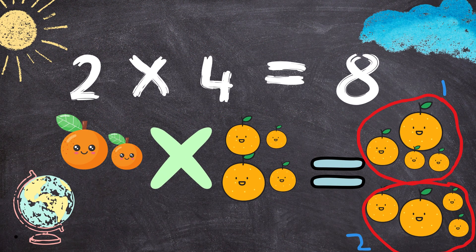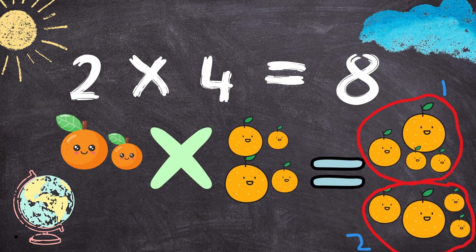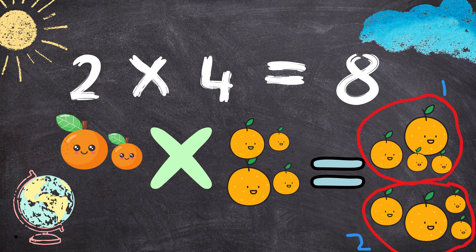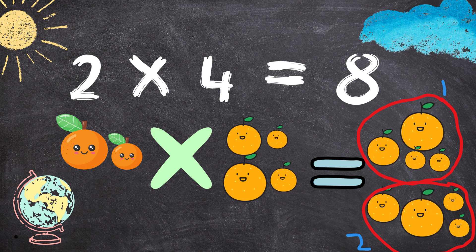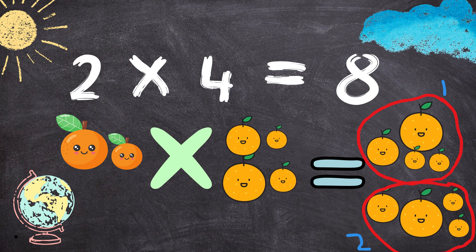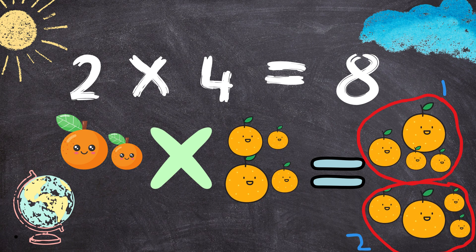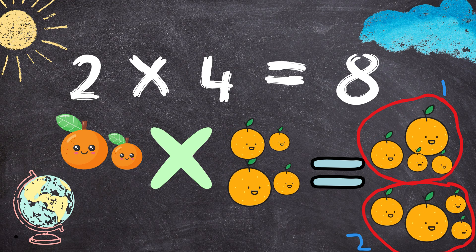Two times four equals eight. Two oranges multiplied by four oranges equals one, two, three, four, five, six, seven, eight oranges.